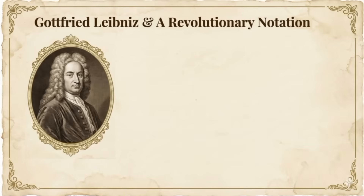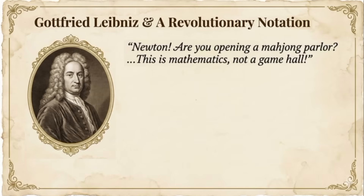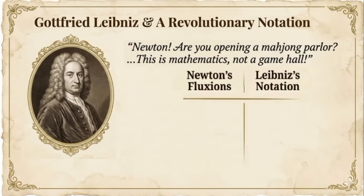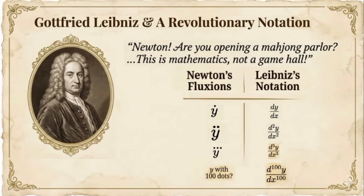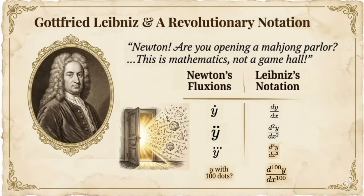Enter Gottfried Wilhelm Leibniz, Newton's rival and co-inventor of calculus. When Leibniz saw Newton's notation for higher derivatives, legend has it he quipped: 'Newton, are you opening a mahjong parlor? What's with all these bamboo sticks? This is mathematics, not a game hall.' So Leibniz proposed a revolutionary alternative — a notation that could handle any order derivative with clarity. The first derivative is dy/dx, the second is d²y/dx², the third is d³y/dx³, and continuing this pattern, the hundredth derivative is d¹⁰⁰y/dx¹⁰⁰. This wasn't just a cosmetic change — this new notation would unlock entirely new ways of solving differential equations.